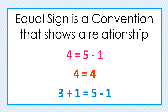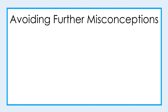In order to eliminate misconceptions around the equal sign, we must instruct students in such a way that they see the equal sign to have a relational meaning, representing a balance or a relationship between the quantities to its left and to its right. Finally, we must avoid further misconceptions by properly and intentionally using the equal sign.